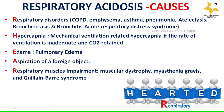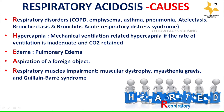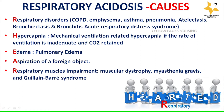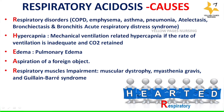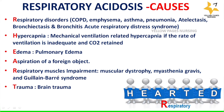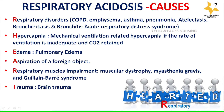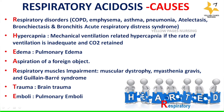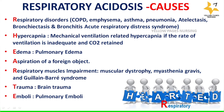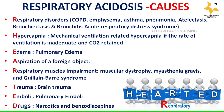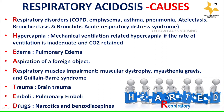Next is Guillain-Barré syndrome, a problem with the nervous system causing muscle weakness where the respiratory muscles fail to respond properly to the respiratory drive, leading to respiratory acidosis. T stands for brain trauma — excessive pressure on the respiratory center in the medulla oblongata depresses respirations. E stands for emboli — pulmonary emboli can cause obstruction in a pulmonary artery, resulting in airway obstruction and inadequate gas exchange. D stands for drugs like narcotics and benzodiazepines, which cause hypoventilation leading to respiratory acidosis.